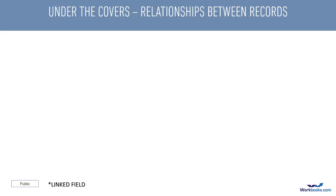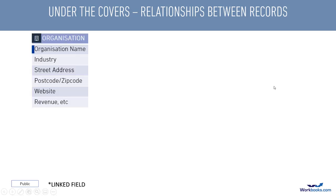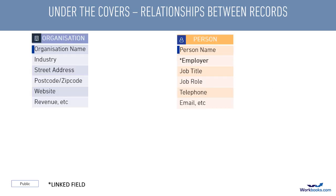Let's just remind ourselves of how some of the record types in Workbooks join together. Here's an example of an organisation record and here's an example of a person record. The employer field on a person record can only be populated with the name of an organisation on your system. Doing this creates an employer-employee relationship between the two. The employer field can be left blank but if it isn't blank it must have an organisation name in it.